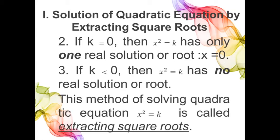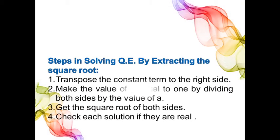This method of solving a quadratic equation x squared equals k is called extracting square roots. The steps are: first, transpose the constant term to the right side; second, make the value of a equal to 1 by dividing both sides by the value of a; third, get the square root of both sides; and lastly, check each solution to see if they are real.